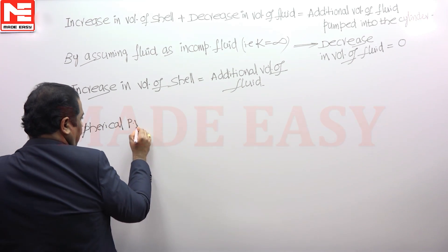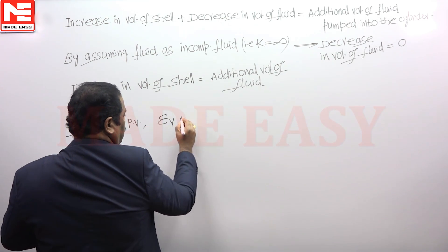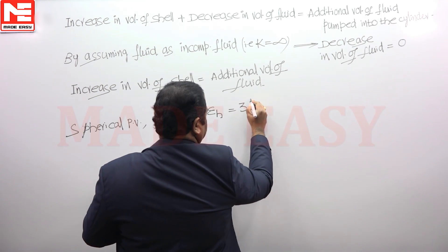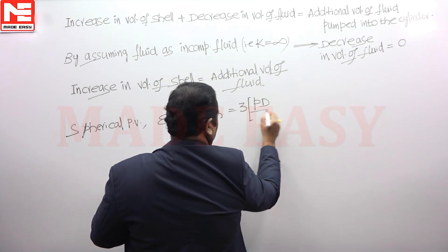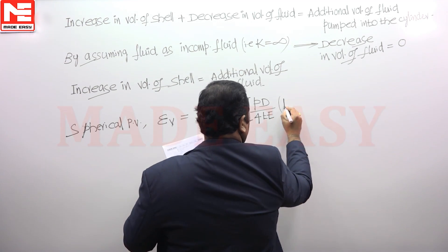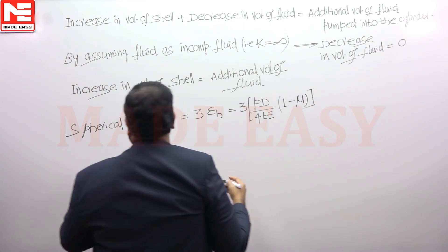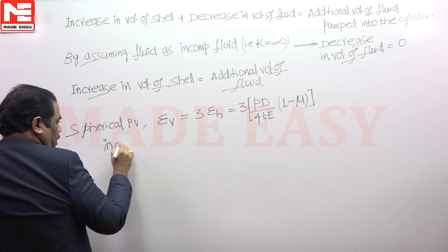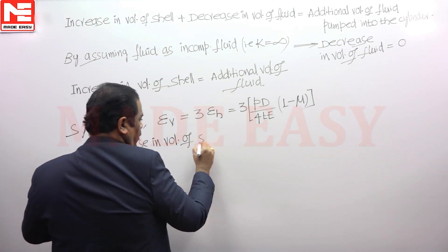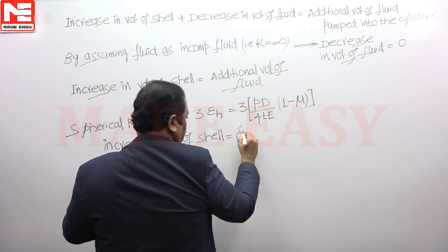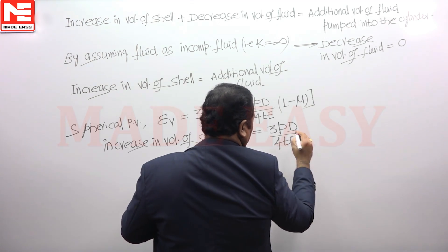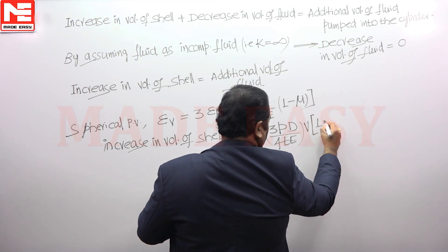In a spherical pressure vessel, volumetric strain equals 3 times the hoop strain, where hoop strain is given by Pd/4tE × (1 − μ). Therefore, the increase in volume of the shell equals 3 × (Pd/4tE) × (1 − μ) × the original volume.